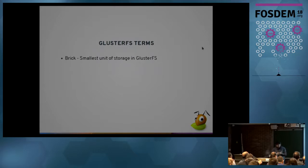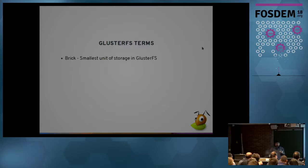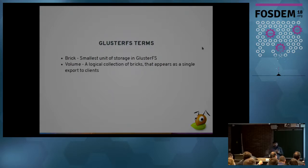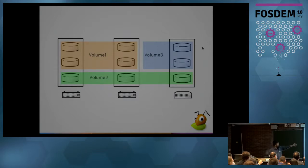We also export GlusterFS volumes using products like Samba and Ganesha, and we integrate with QEMU to provide direct access to GlusterFS storage. We keep talking about bricks in GlusterFS — a brick is the smallest unit of storage. There is the brick directory and the brick process. A brick directory is an empty directory on your GlusterFS server — typically the mount point of one of your disks. A brick process exports that directory out to clients. A volume is a logical collection of bricks to provide you with distributed, replicated, or redundant storage. We can combine different bricks to get volumes with the characteristics you want.